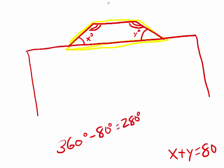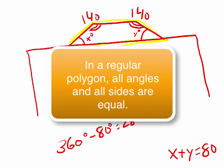And if those two angles add up to 280, then each one must be 140. And we know that because the question tells us this is a regular polygon. Regular polygon means all the sides are equal, all the angles are equal.